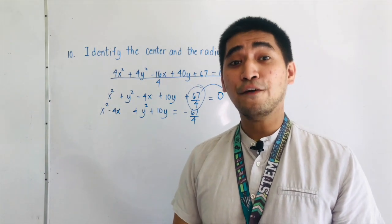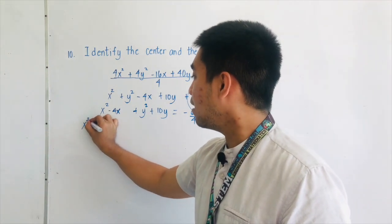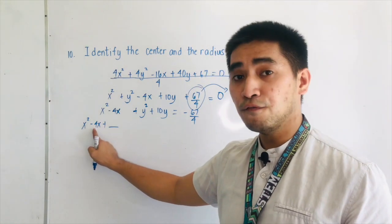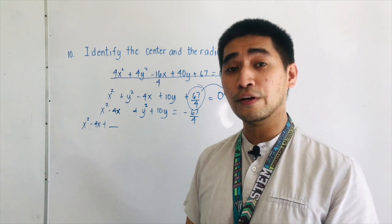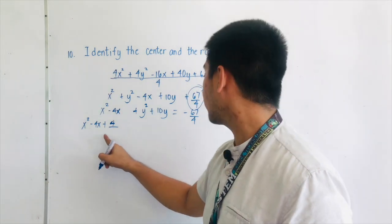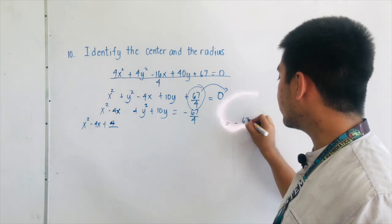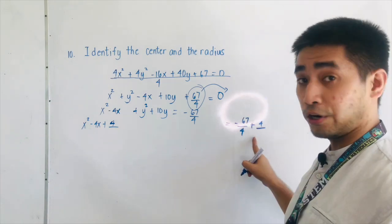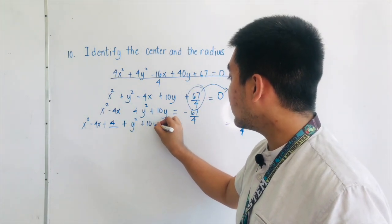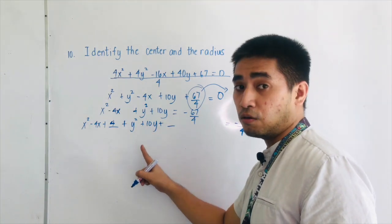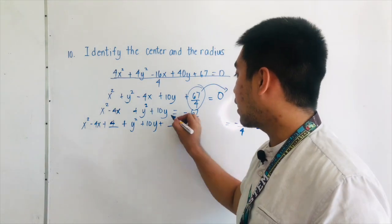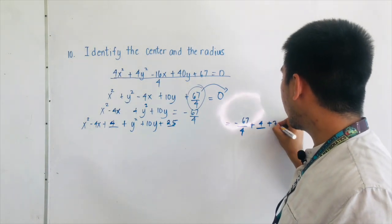Next step is to complete the squares. For x: the formula gives negative 4 divided by 2, which is negative 2. Negative 2 squared is 4, so we add plus 4 to both sides: negative 67 over 4 plus 4. For y: 10 divided by 2 is 5; 5 squared is 25. So we add plus 25 to both sides as well.